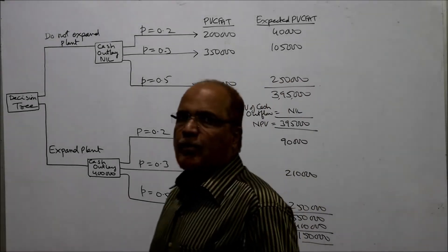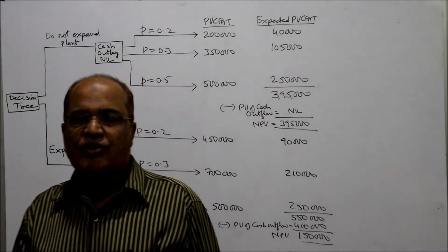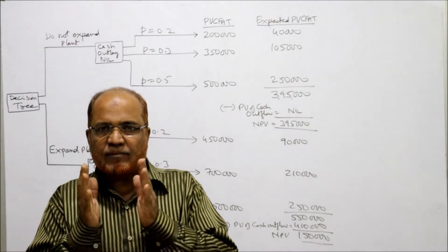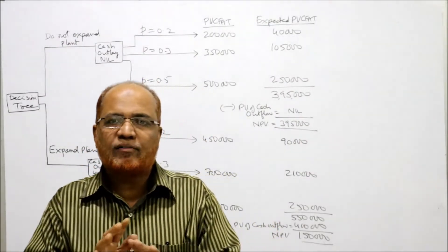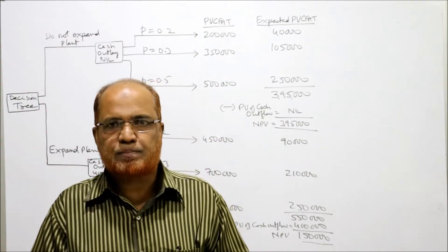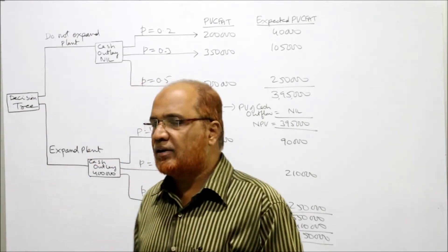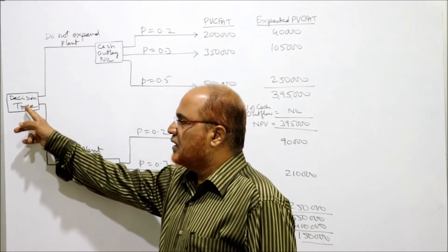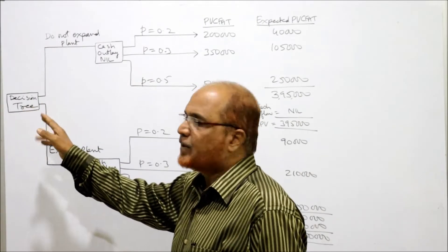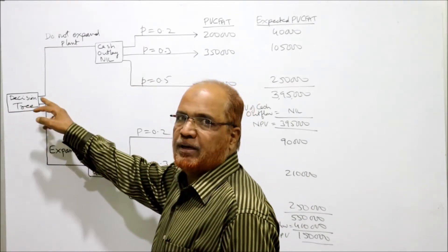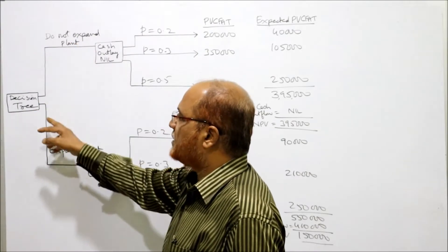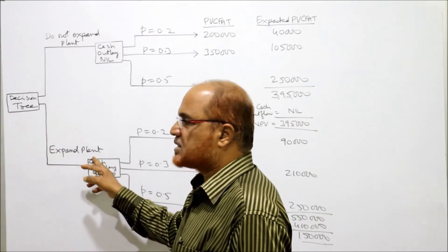The problem asks us to show it in decision tree form and we have to take the decision. First of all, the company has two alternatives: the first alternative is do not expand, and the second alternative is expand. So these two main alternatives are shown in this decision tree, which begins from the left side, with two branches coming out.